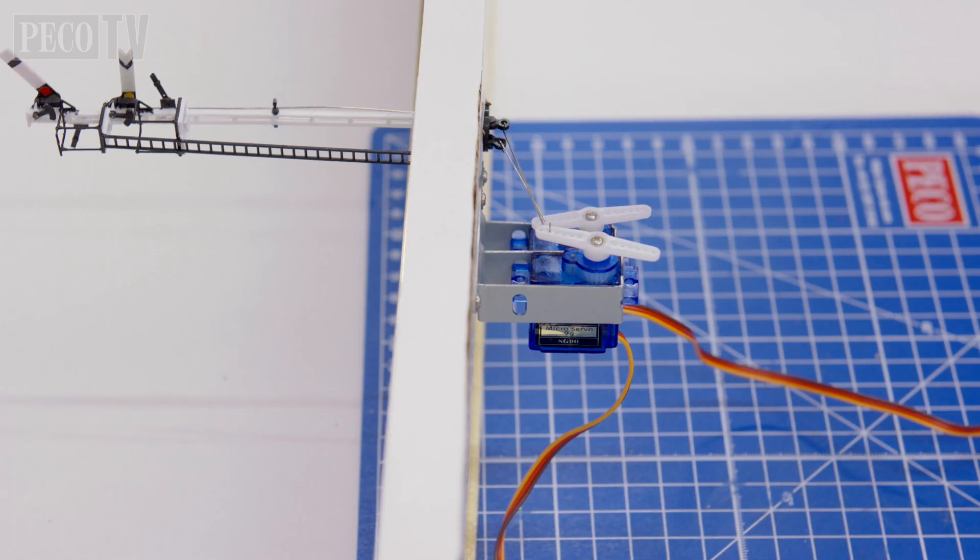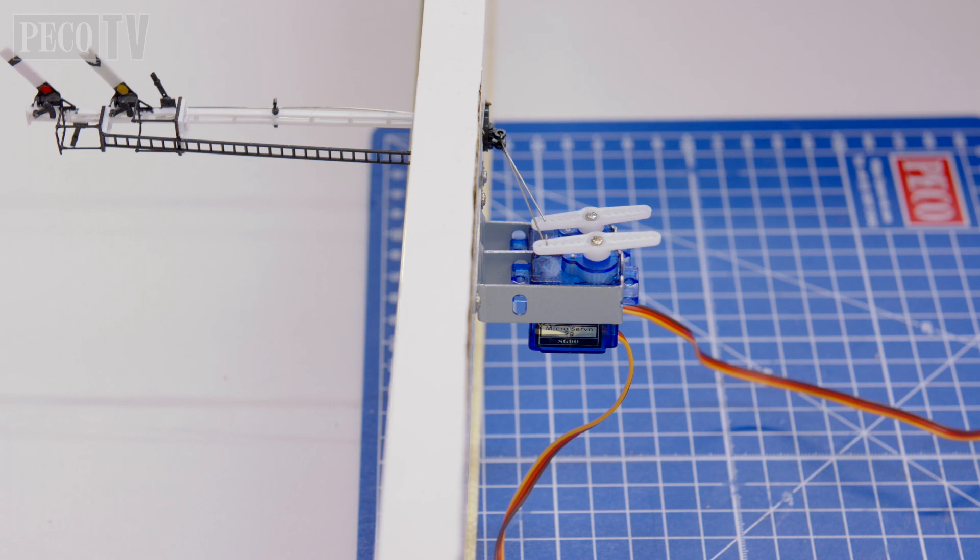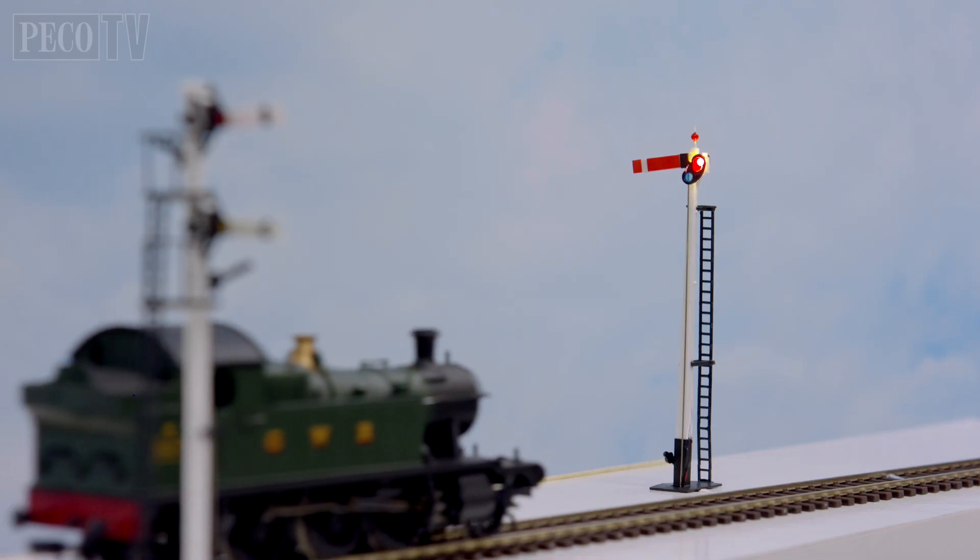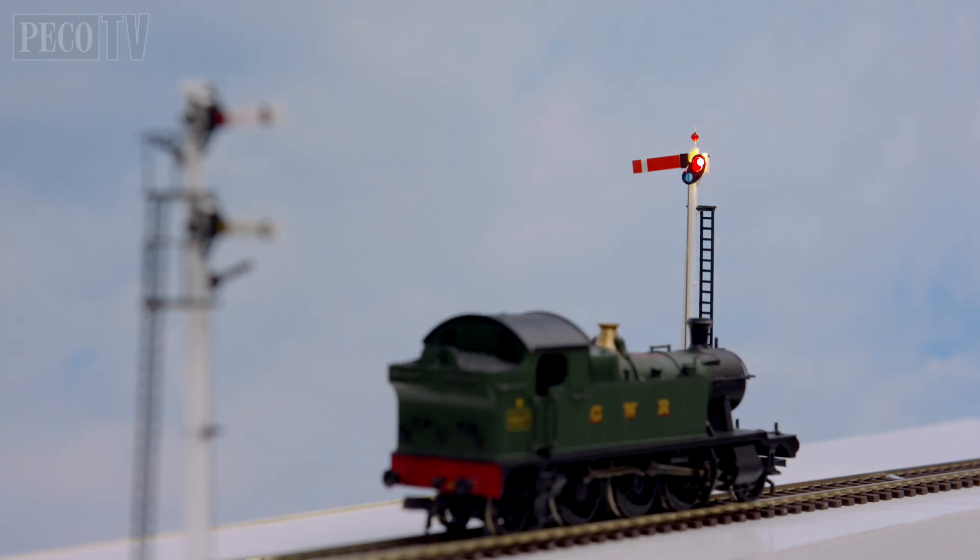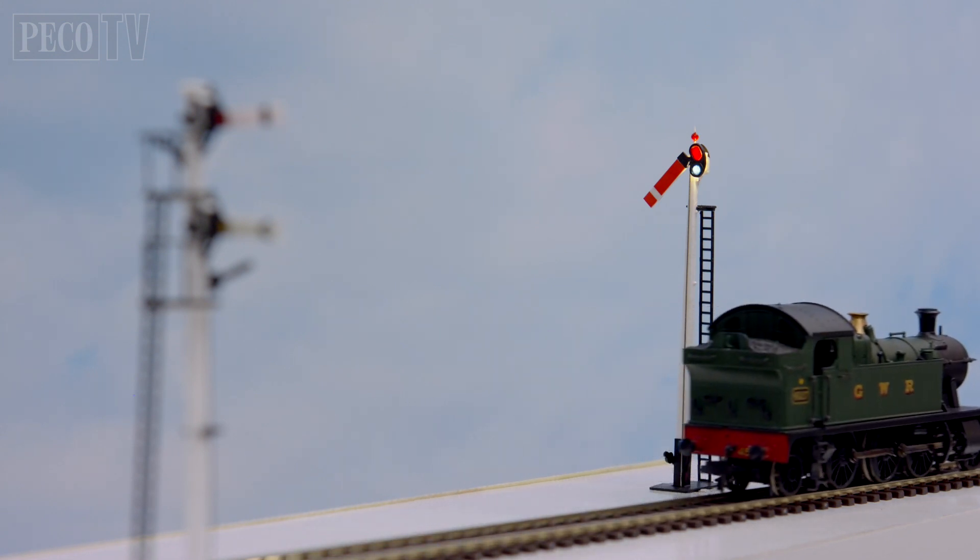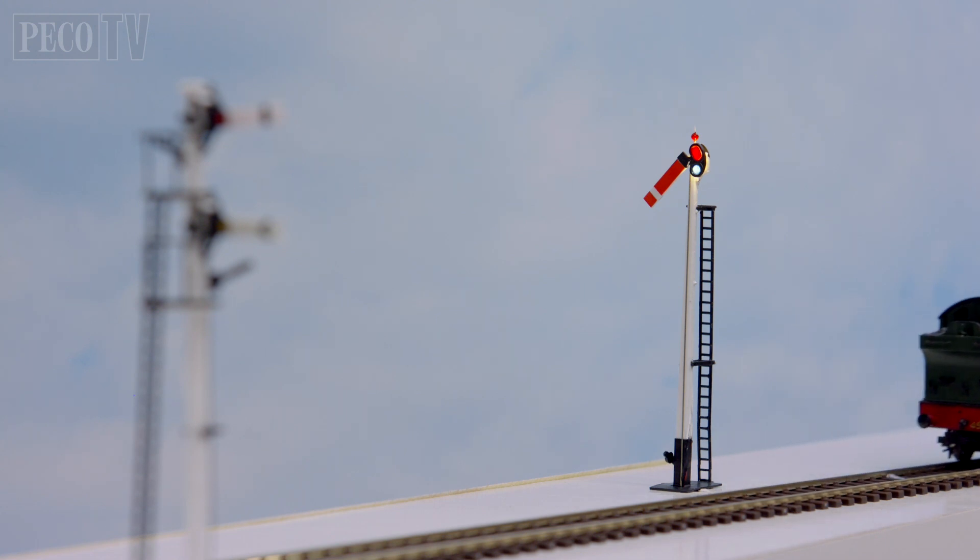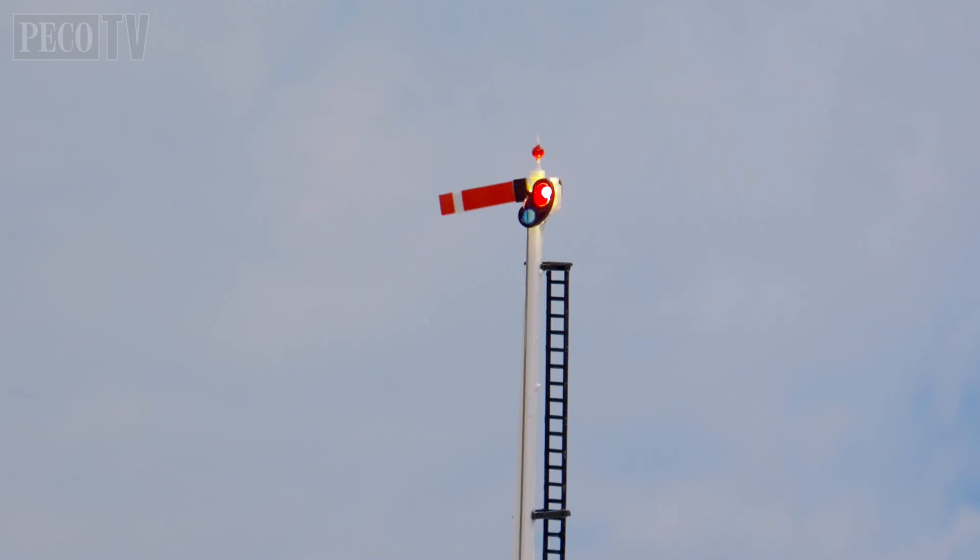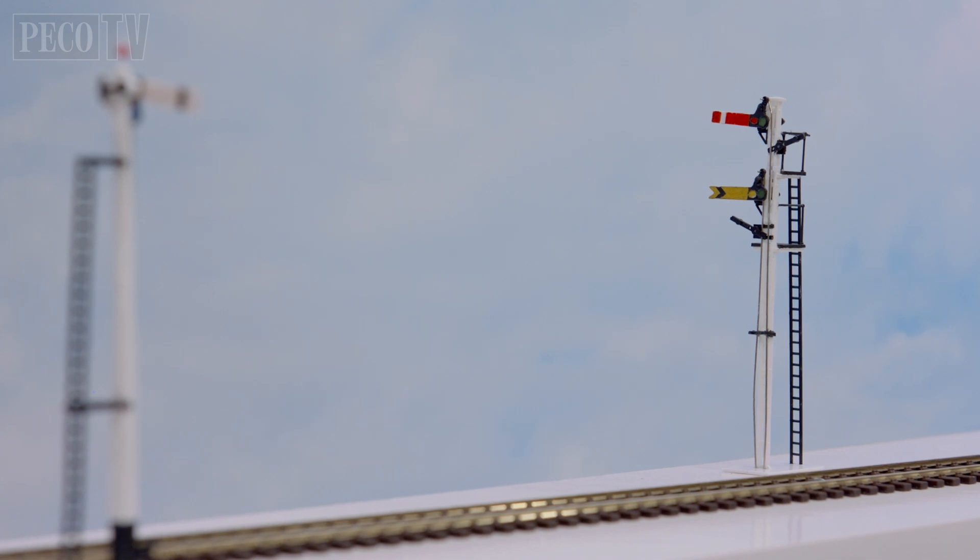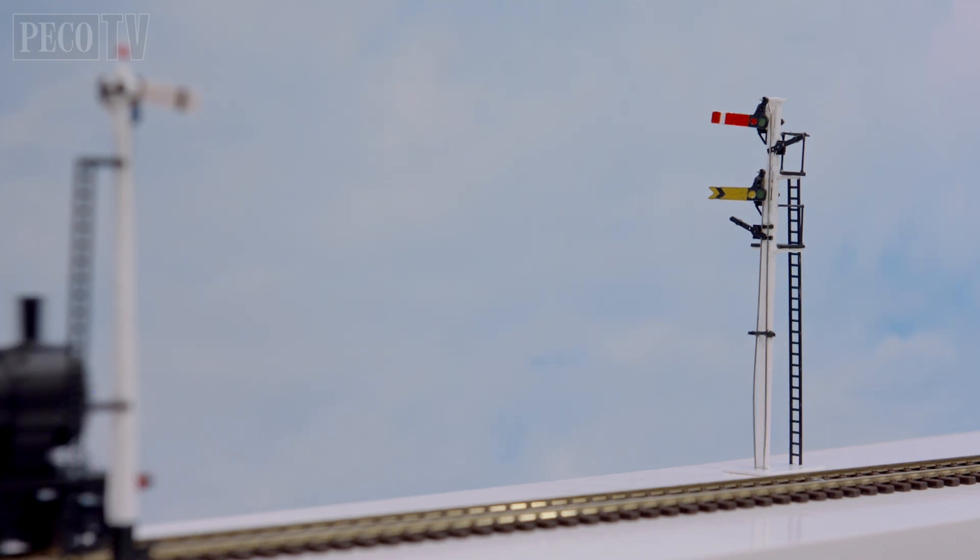Program and test your smart switch servos. And there we have it. First up is the Great Western Square Post signal motorized with working LED. And to follow, a Southern Railway rail built signal post with both home and distance signals.